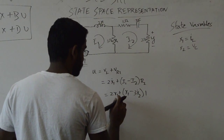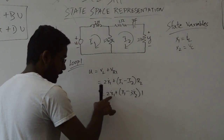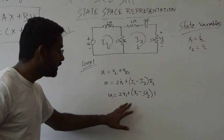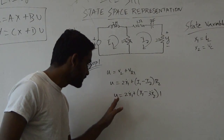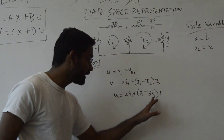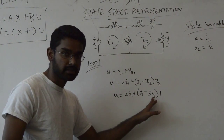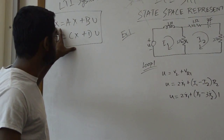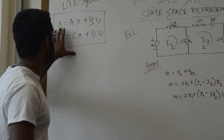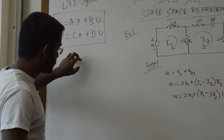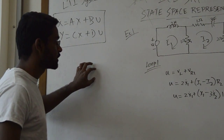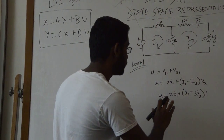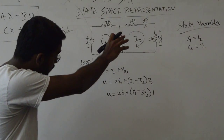I'm going to leave the loop 1 equation as it is, because it contains both x1-dot and x2-dot. In a state space representation, I don't want derivatives mixed together — each line should only have x1 and x2, not their derivatives. So I'll get more information from loop 2 before resolving this.